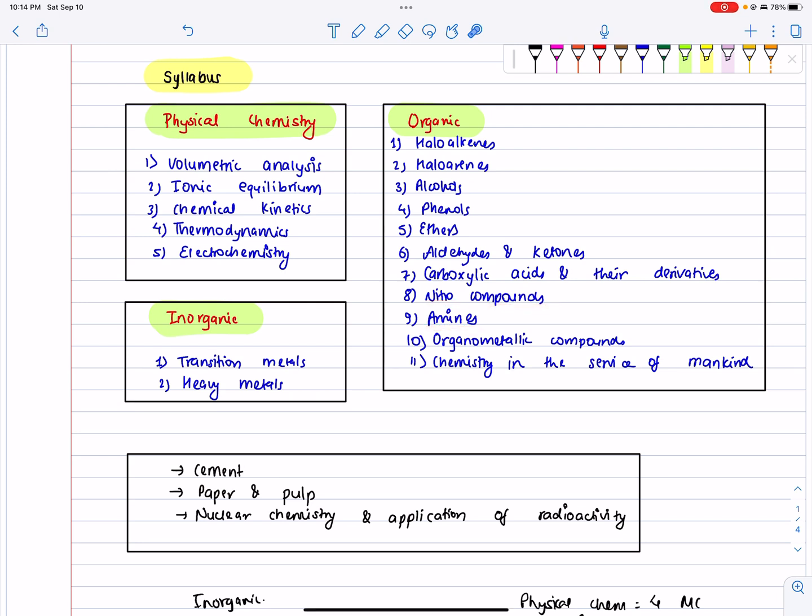This topic is about the separation of amines by the Hinsberg method, and then there are primary, secondary, and tertiary alcohols. This question is very important. Separation of amines is a very important question.